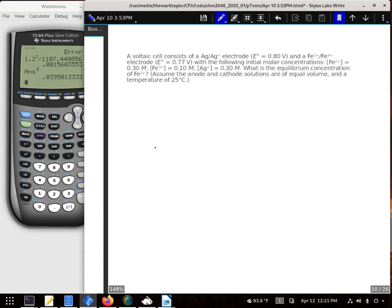A voltaic cell consists of a gold or silver electrode and an iron electrode. It has the initial concentrations listed there: 0.3, 0.1, and 0.3. And we want to know what is the equilibrium concentration of Fe3+.